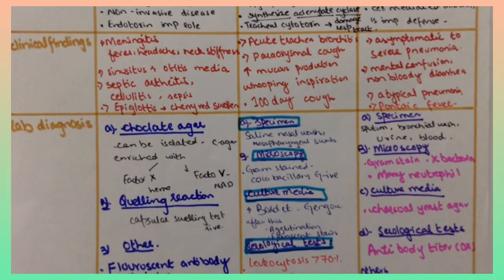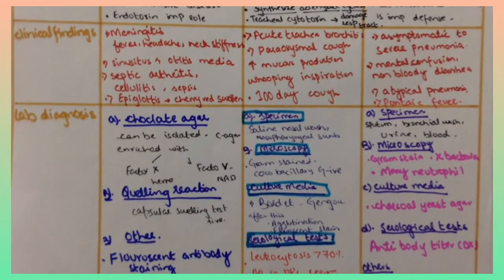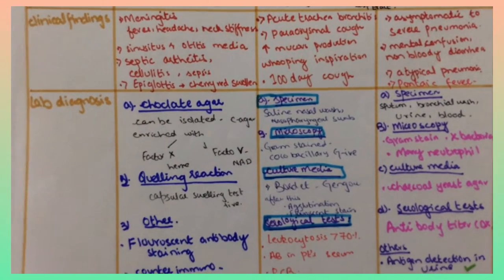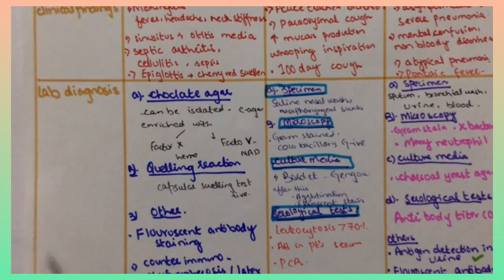In Haemophilus, chocolate agar should be there, it can be isolated. Chocolate agar enriched with factor X and factor V. Quelling reaction is positive, vaccine is available.